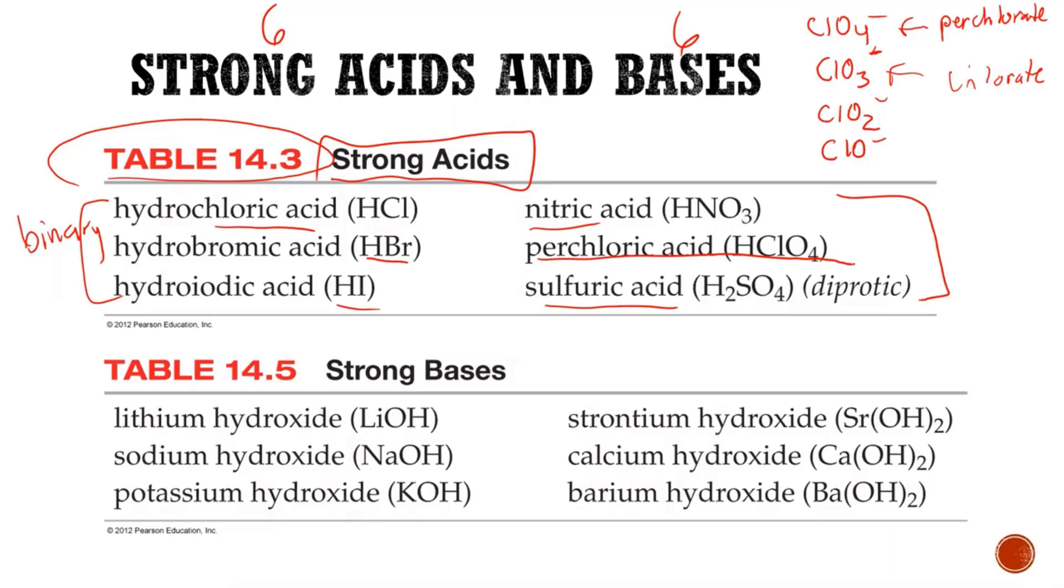The bases are easier to know. You can go on a periodic table, look at group one. They got lithium, sodium, potassium. You go one over to group two on your periodic table, and you guys can look at your periodic table. Then it goes calcium, strontium, and barium.